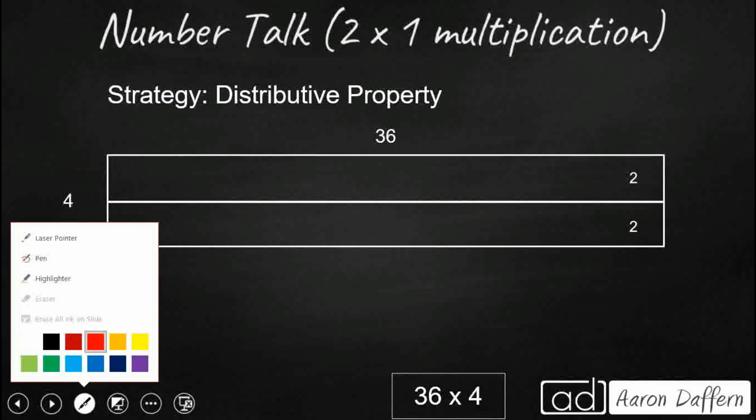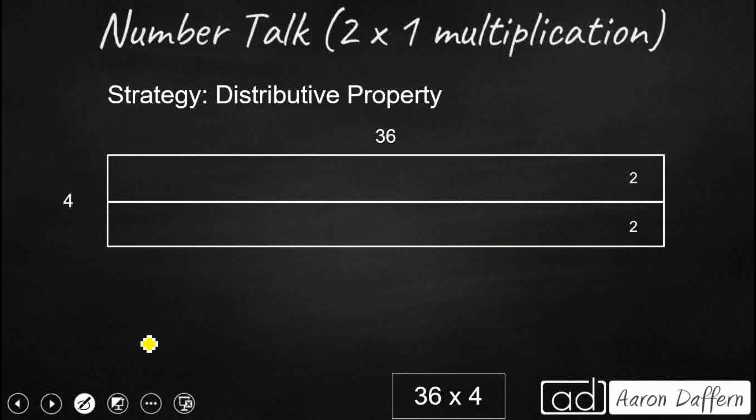So one way that we can always solve is using the distributive property. And there are going to be a few different ways we can use the distributive property. But what this does is takes our 36 times 4 and breaks apart our 4. And you notice we are going to break it apart into 2 and 2. So we are going to take our 4 and break it up into 2 plus 2.